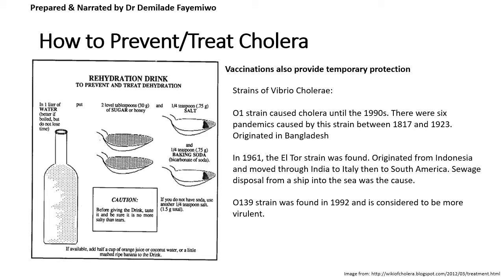There are different strains of Vibrio cholerae. The O1 strain caused cholera until the 1990s, with six pandemics between 1817 and 1923, said to originate from Bangladesh. Another strain emerged in 1961, originating from Indonesia and spreading through Italy to South America and India. There is also the O139 strain, considered more virulent. This is one reason why you are often advised to boil your water before drinking it — boiling kills any pathogens that might be present.